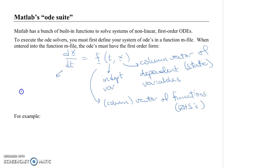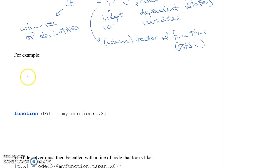This DXDT is a column vector of derivatives. So, for example, your X vector is equal to X1, X2, dot dot dot, XN. Your F is a vector of functions, like F1 of T, X, F2 of T, X, dot dot dot, FN of T, X.